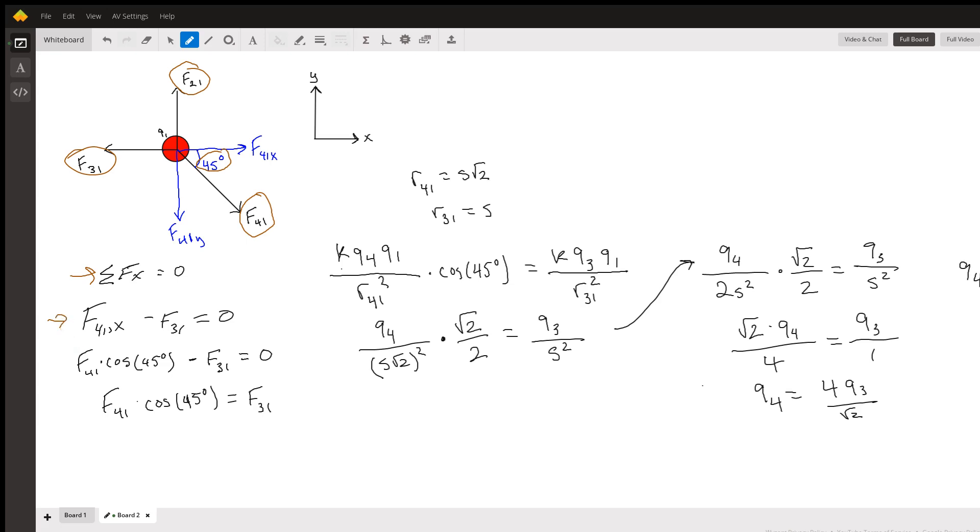We know that the x component will equal the net force of four-on-one times the cosine of 45 degrees. That'll give us the x component of the net force four-on-one, and we'll have that minus force three-on-one all equal to zero.